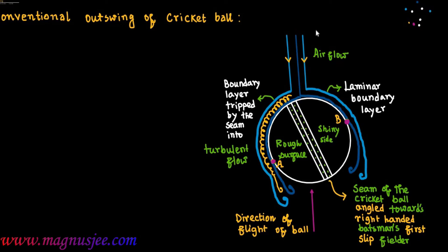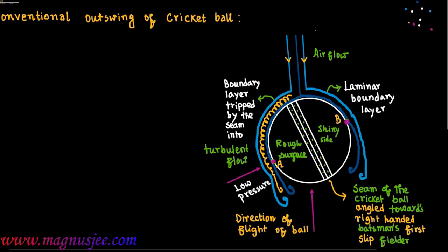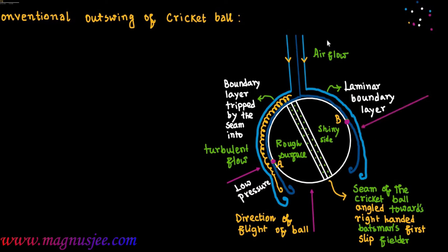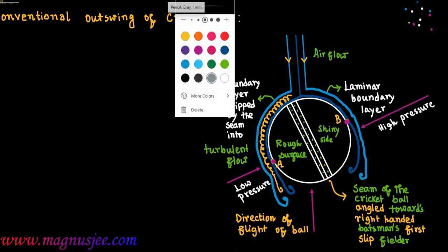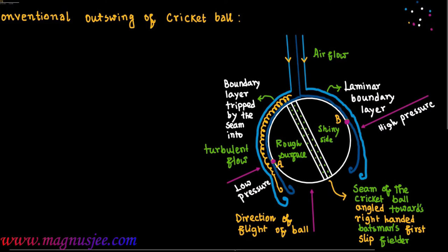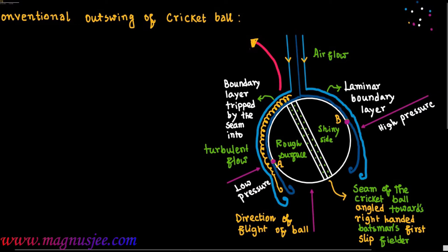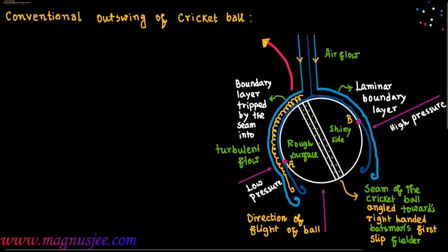There will be a turbulent boundary layer on the seam side of the cricket ball. For turbulent flow there will be a low pressure region, and for the laminar boundary layer there will be high pressure — that means high pressure acts on the shiny side or non-seam side of the cricket ball. Hence, due to this asymmetrical air flow on the two sides of the cricket ball, a pressure difference will act from the shiny side to the rough side, and the ball will swing.